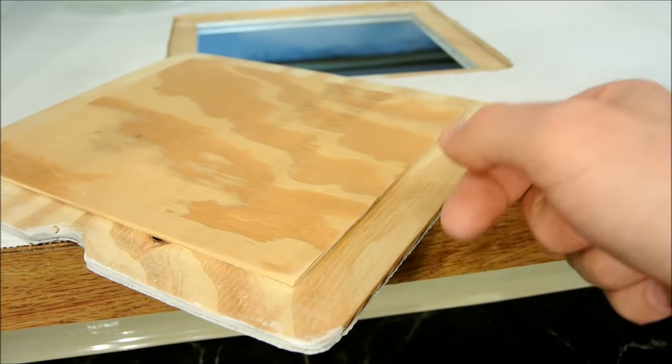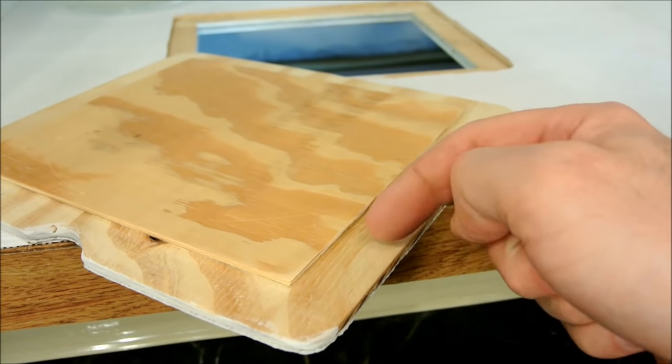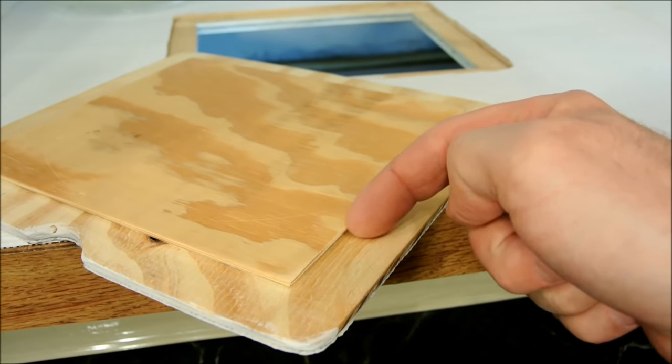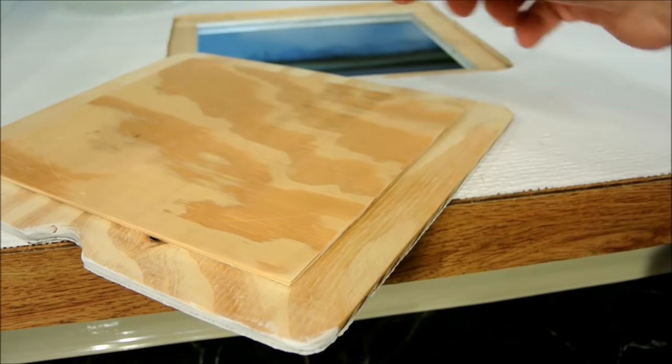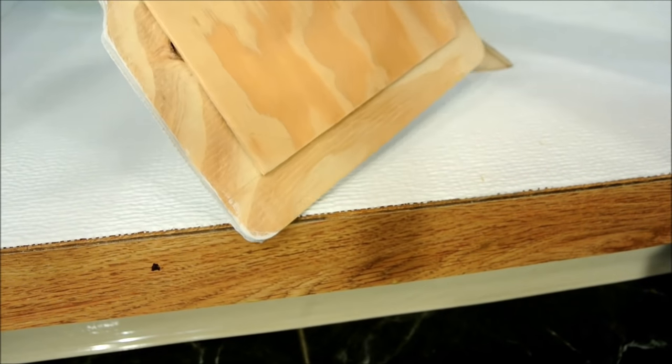And finally, for the lid, I just used a piece of 3/8 plywood and removed some of the material on the table saw that I didn't need so that I could get it to sit flush.